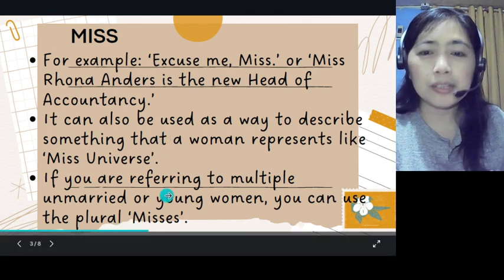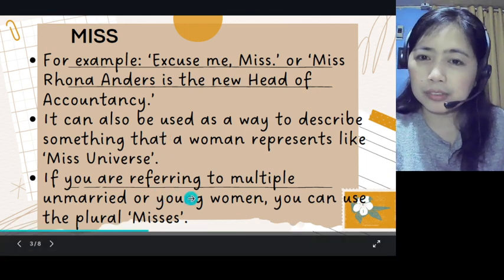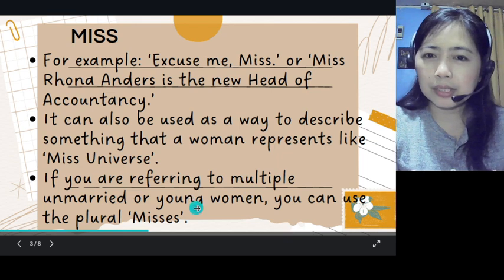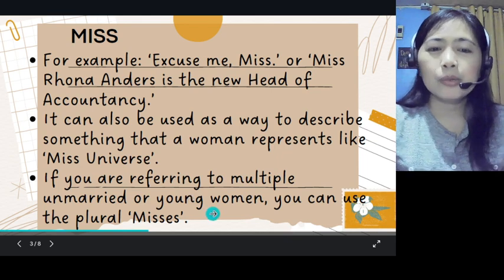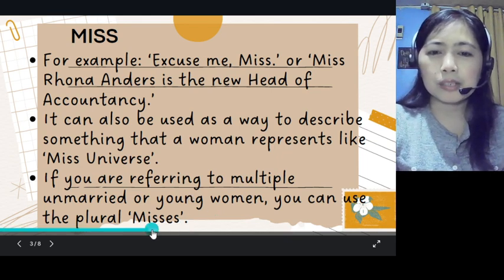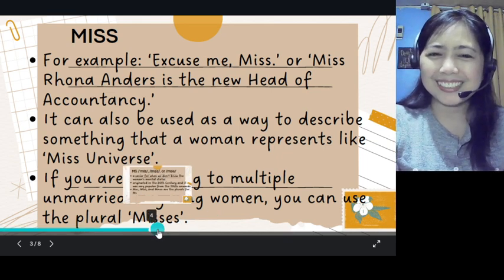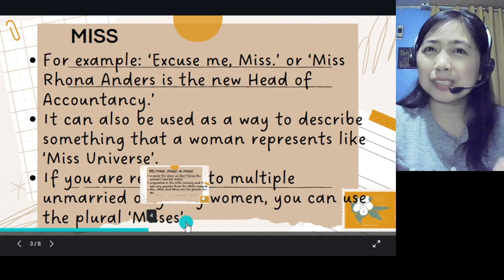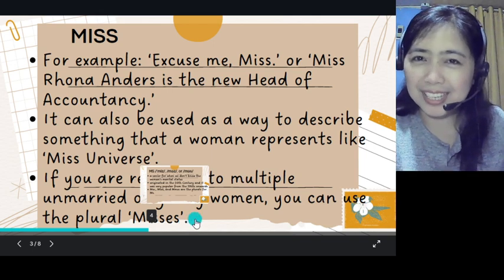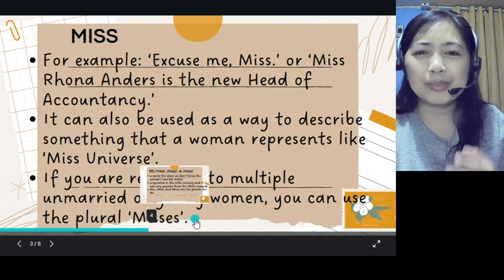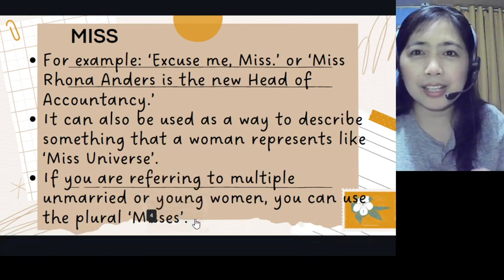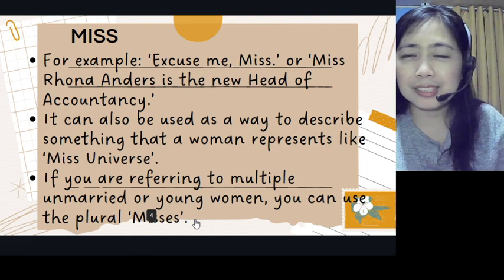If you are referring to multiple unmarried young women, you can also use the plural form of Miss. So we do have the basic noun form here — remember, we are talking about the noun, how we call a certain woman.